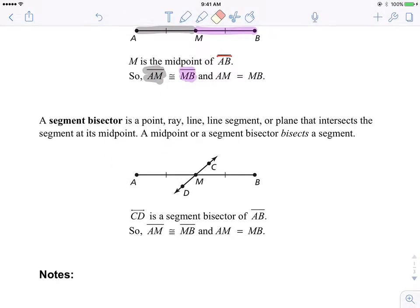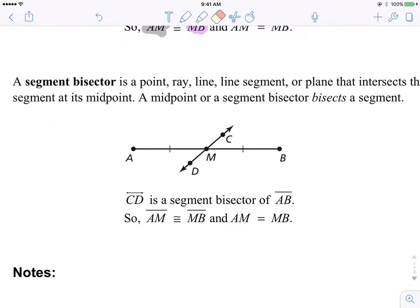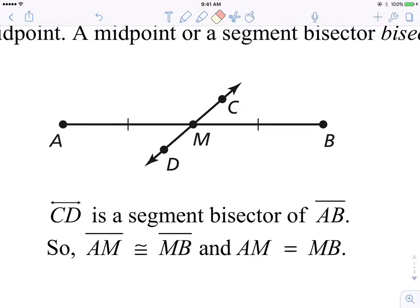A segment bisector. Now again, a segment bisector is either a point, ray, a line, a line segment, or even a plane that intersects a segment at its endpoint. A midpoint or a segment bisector bisects a segment. So how can you divide a segment in half? Well, you can do it a couple of ways. You can use just a point called a midpoint.